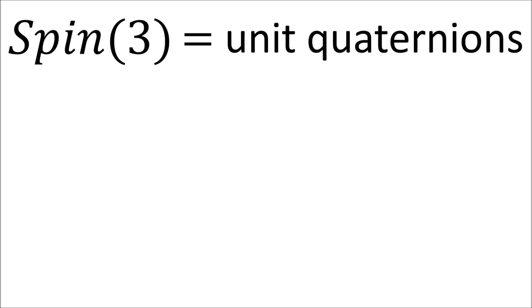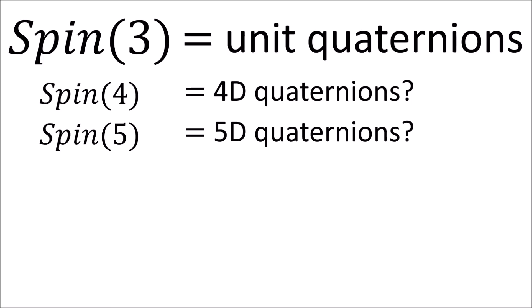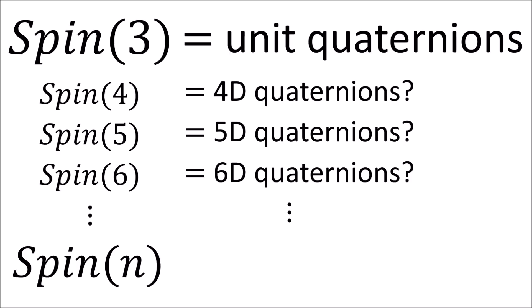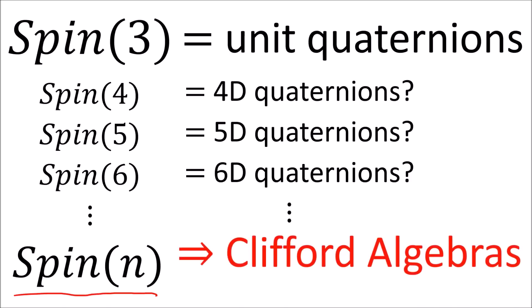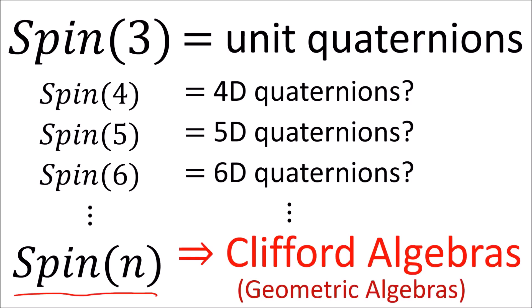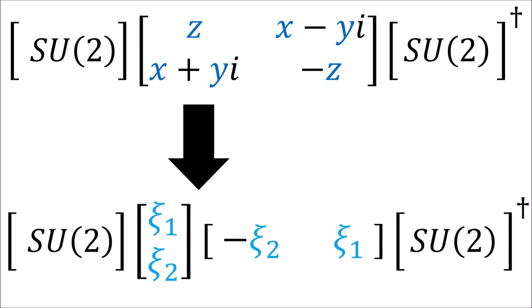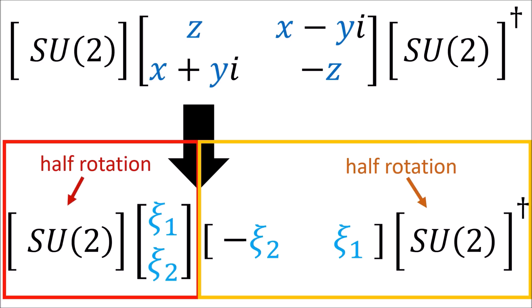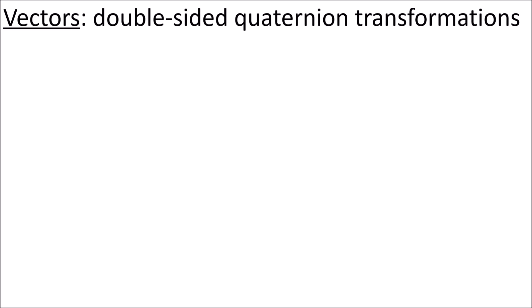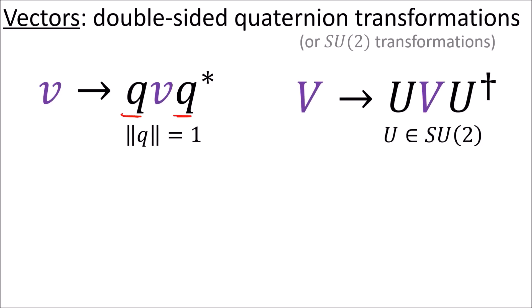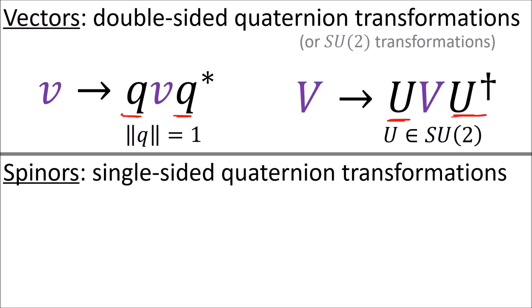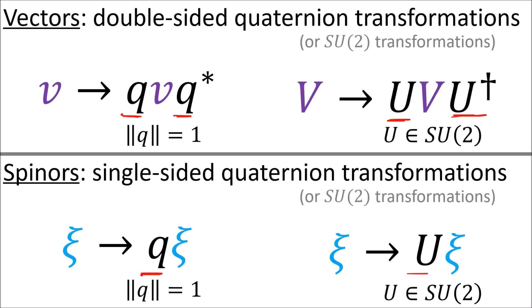If we want to build the higher-dimensional versions of the quaternions that do rotations in 4, 5, 6, and generally n dimensions, we need to learn how to build the Spin(n) group. We'll do this later in the video series when we discuss Clifford Algebras. In the next video, I'll show that we can factor a Pauli vector into a pair of Pauli spinors, where each one transforms with a single SU2 matrix. So basically, we can think of vectors as objects that transform with a pair of quaternions, and spinors as objects that transform with a single quaternion.